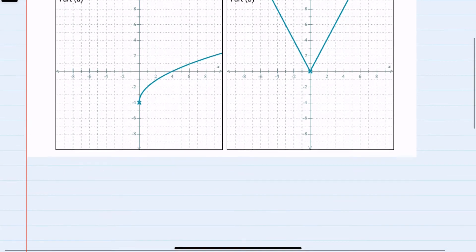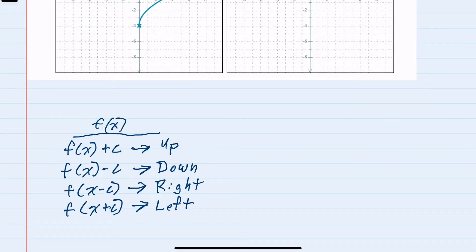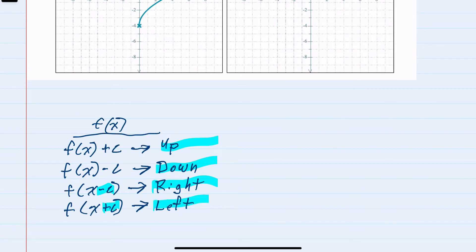To start, I'll recall that if we're given a function f of x, adding a constant to the end of that function shifts it up that many units, subtracting a constant from the end shifts it down that many units, replacing the variable with the variable minus a constant shifts right, and replacing the variable with the variable plus a constant shifts left.